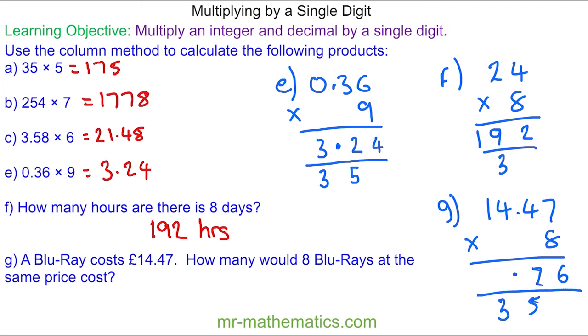4 times 8 is 32. Add the 3 is 35. So 5 tens and 3 units. And then 1 times 8 is 8. Add the 3 is 11. So 1 ten and 1 hundred. So £115.76.